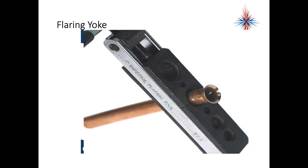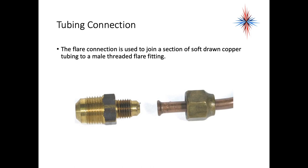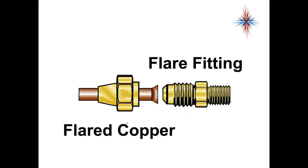The flare connection is used to join a section of soft copper drawn tubing to a male threaded flare fitting. When you look at this, you see that the beveled end of this fitting exactly matches the bevel of this flare. That's why it's really important to get this correctly into the flare block and don't do it in an angle—it has to be a straight line.